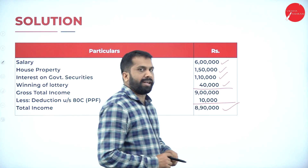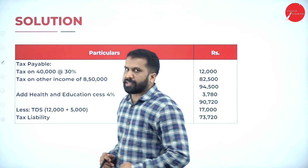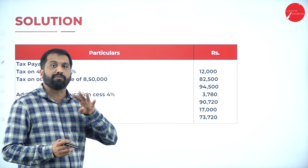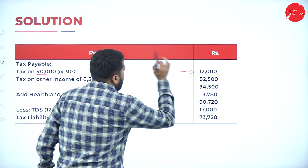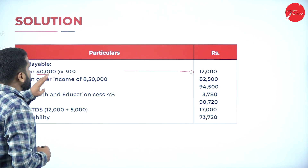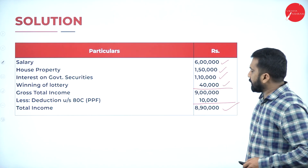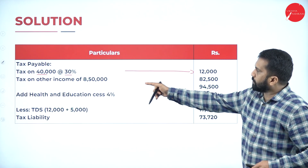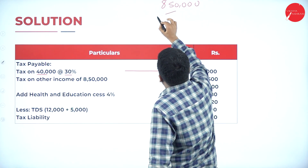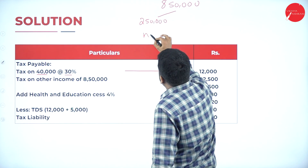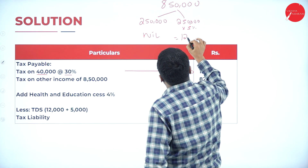Total income is eight lakh ninety thousand. Now calculate tax on eight lakh ninety thousand. Out of this, income from other sources - lottery - is forty thousand, which requires separate calculation. Forty thousand at thirty percent gives twelve thousand as tax on lottery income. Remaining income for slab calculation: eight lakh ninety thousand minus forty thousand equals eight lakh fifty thousand. Up to two lakh fifty thousand: nil.